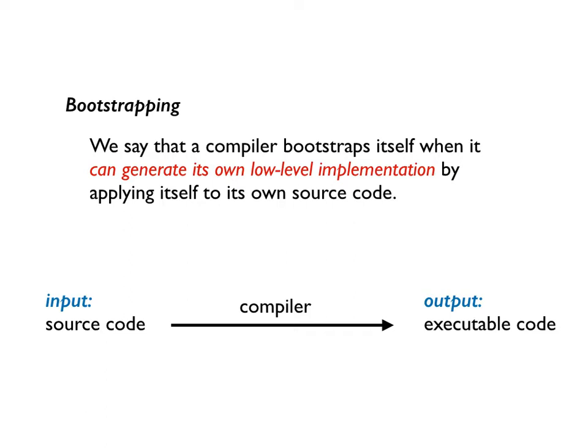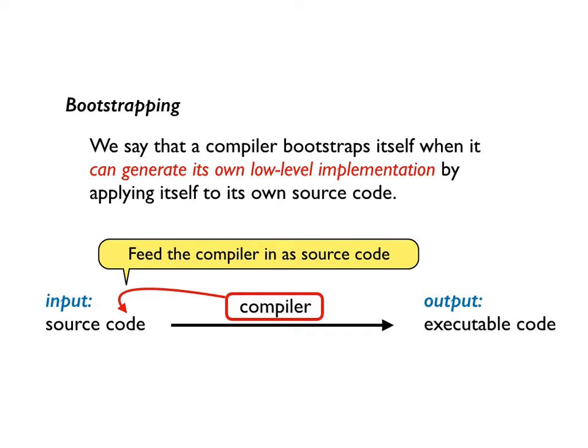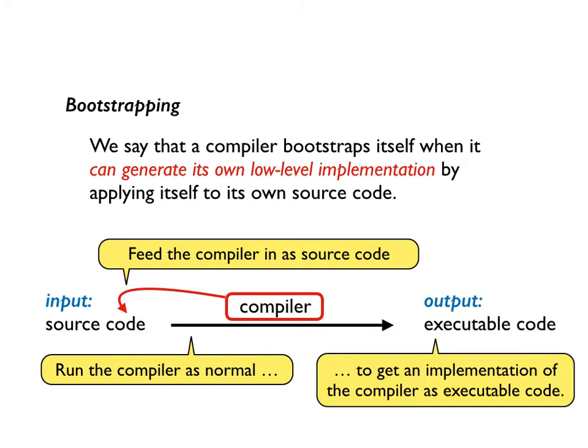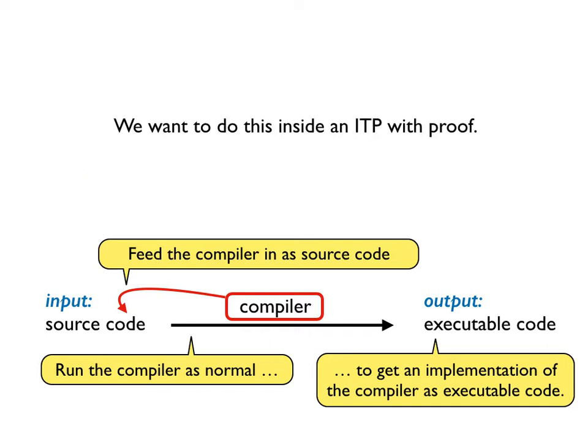The idea can be illustrated as follows. The idea is to feed the compiler its own source code. Run the compiler as normal to get an implementation of the compiler as executable code. And we want to do all of this inside an ITP with proof.